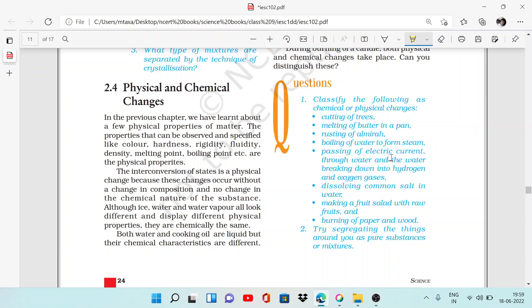Passing electric current through water breaks it down into hydrogen and oxygen gases. Water is your reactant, and when electric current is passed, it changes into hydrogen and oxygen. This is a chemical reaction producing hydrogen gas and oxygen gas. Chemical changes.